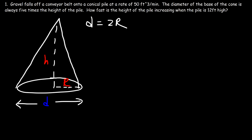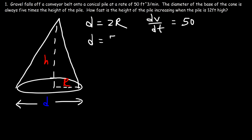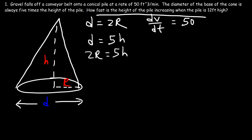Let's list what we know. The 50 cubic feet per minute represents volume, so this tells us the rate at which the volume is changing — that is dV/dt equals 50 cubic feet per minute. We're told the diameter of the base is always five times the height, so d equals 5H, and since d equals 2r, we can say 2r equals 5H.